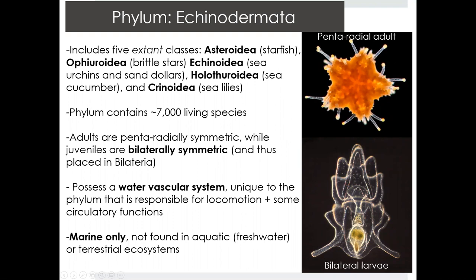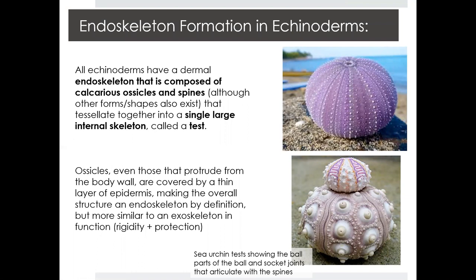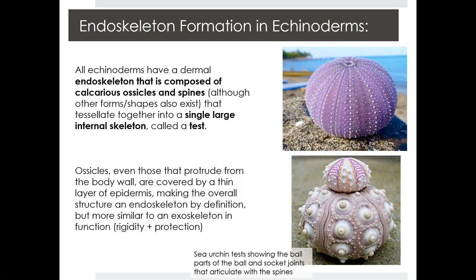One of the other critical innovations is the endoskeleton that echinoderms can form. All echinoderms have an endoskeleton composed of calcium carbonate ossicles and spines. These dermal ossicles provide internal structure and support for the body, forming a large internal skeleton called a test. Even the ossicles that protrude from the body wall are covered by a thin layer of epidermis, so even though it may look like an exoskeleton for some species, they are still part of the endoskeleton by definition.